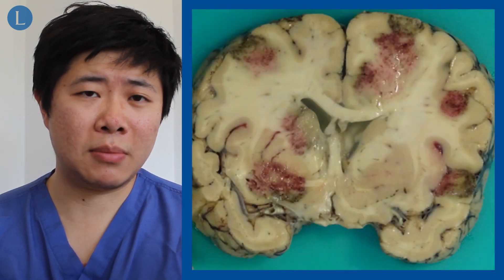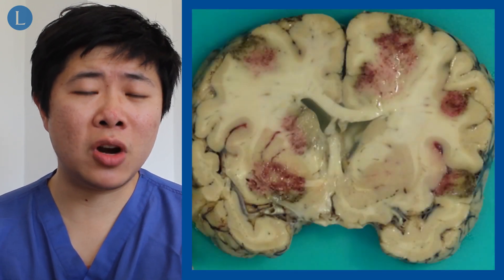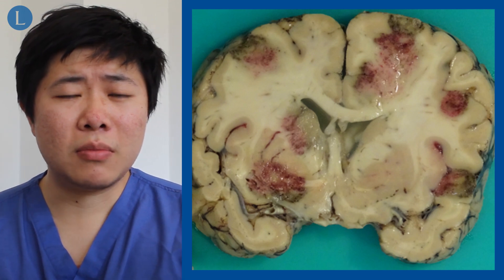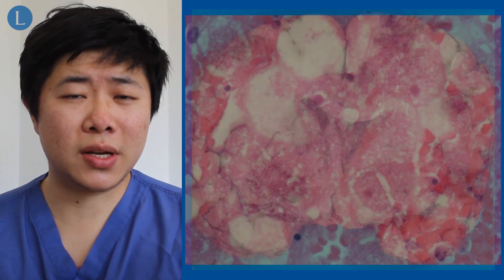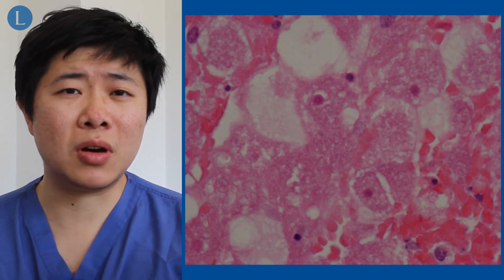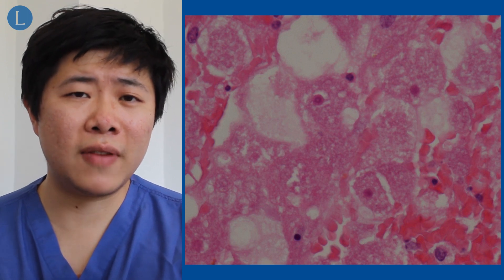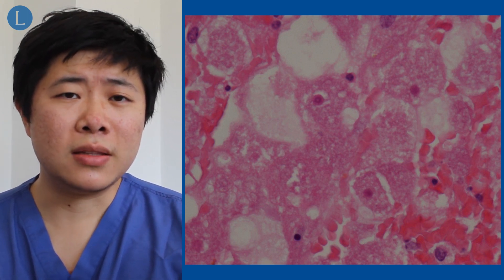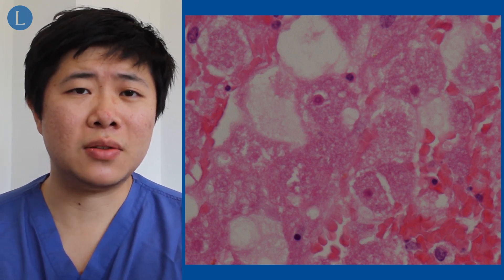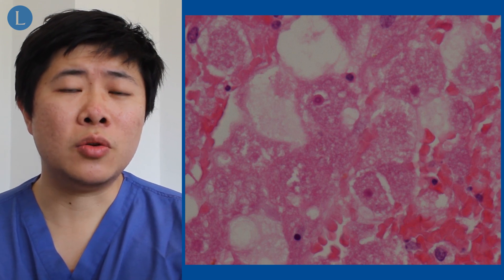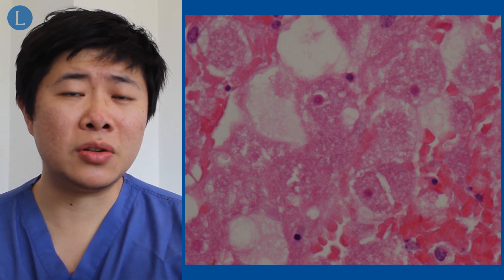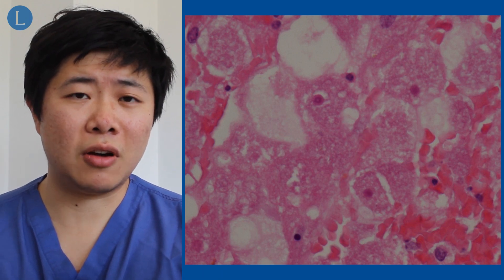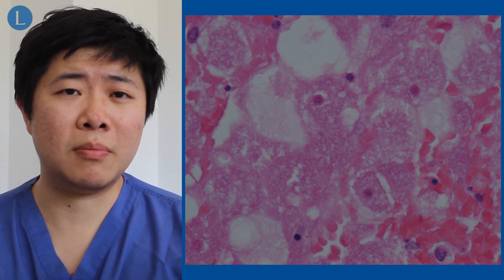Post-mortem examination revealed multiple hemorrhagic lesions all across the brain. Histopathological examination of these lesions showed multiple amoebic cysts in the perivascular space and blood vessel lumen. These samples were sent to the CDC in the USA, who used real-time PCR and genotyping to make a positive diagnosis of Balamuthia mandrillaris.